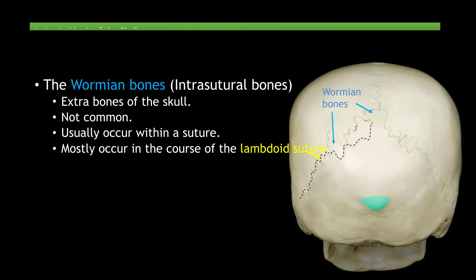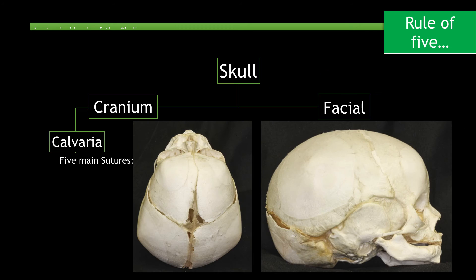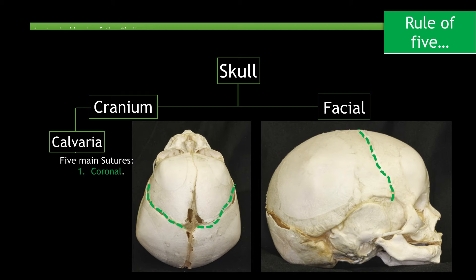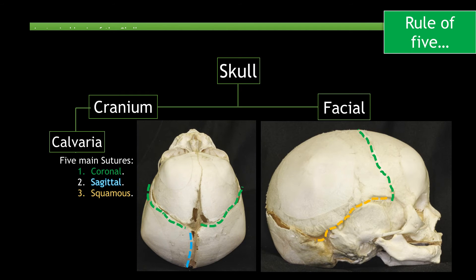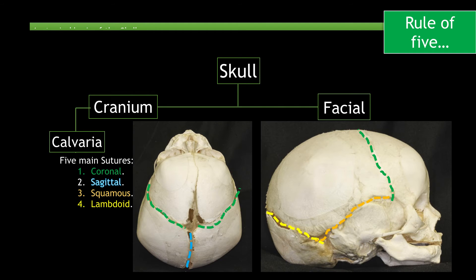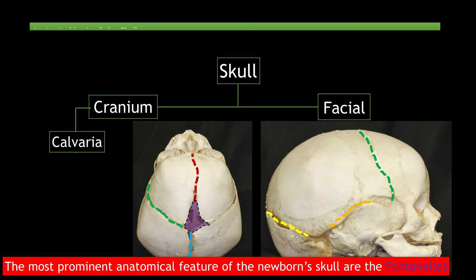Please note that these bones mostly occur in the course of the lambdoid suture. Next, we will mention the five main sutures in the calvaria, which include: the coronal suture, the sagittal suture, the squamous suture found in between the parietal and temporal bones, the lambdoid suture, and the metopic suture.